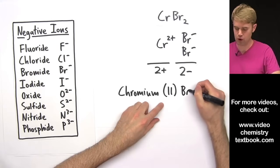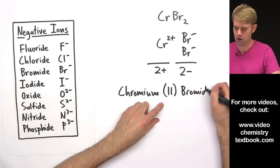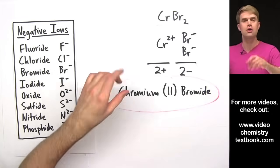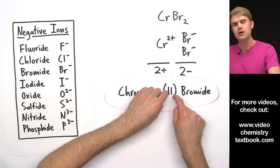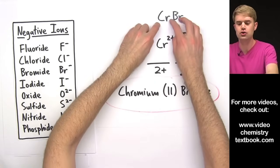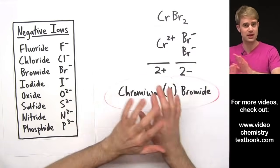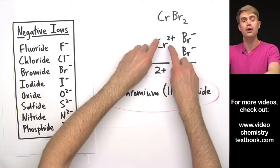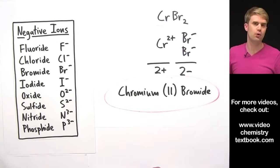So this is going to be chromium(II) bromide. Just a quick word of advice. Don't be confused with this 2. Some students think that it's the number that should come after chromium here, but that's not true. The 2 refers to the charge on chromium. Let's look at a few more examples.